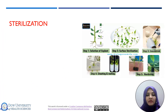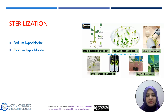The most important thing for in vitro propagation is sterilization — cultures without any microorganism or contamination. Different sterilizing agents can be used with different concentrations. Some are used with higher concentration, and some are used with lower concentration but for a longer period of time. The time period and concentration of sterilization are very important.